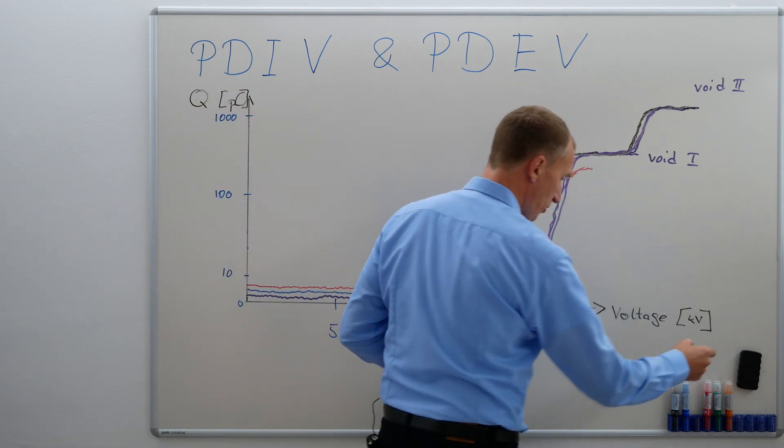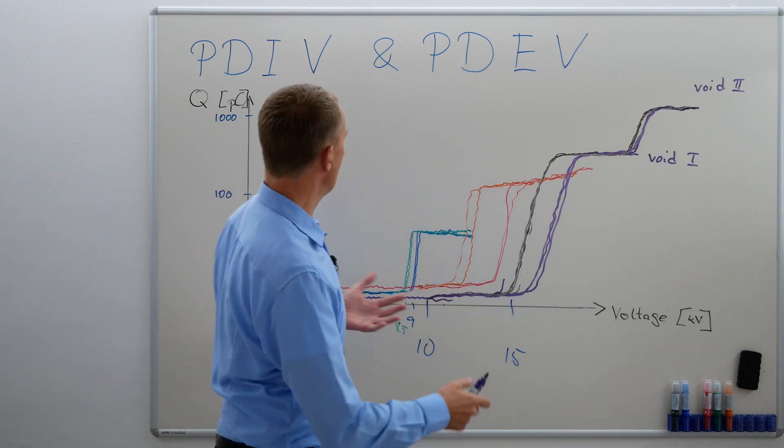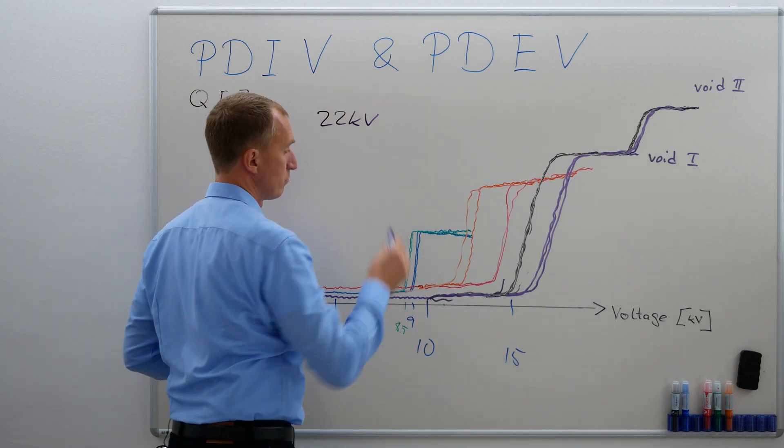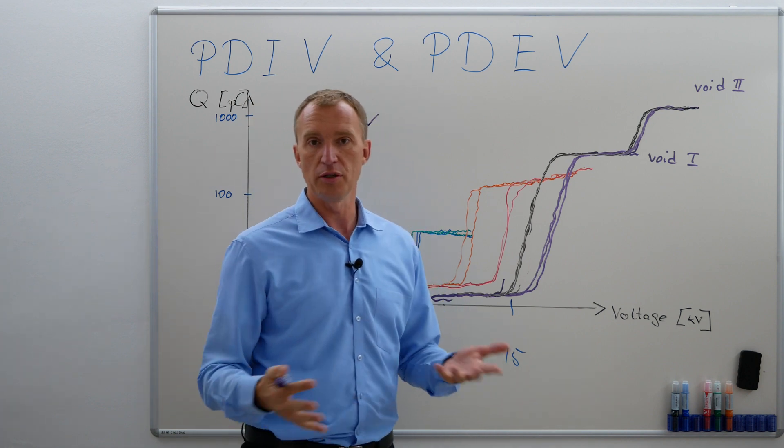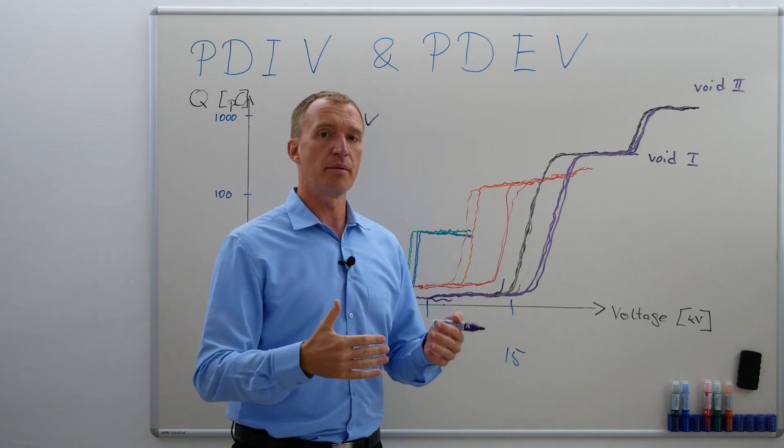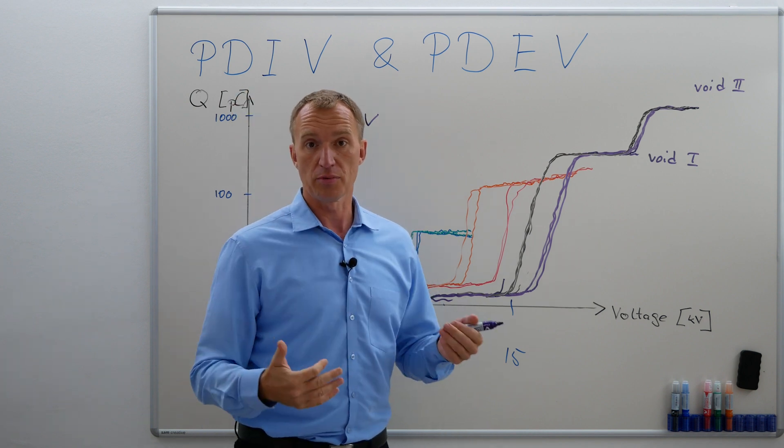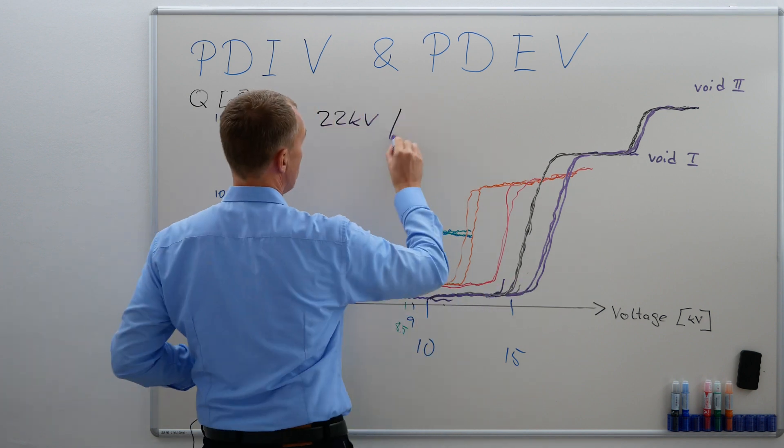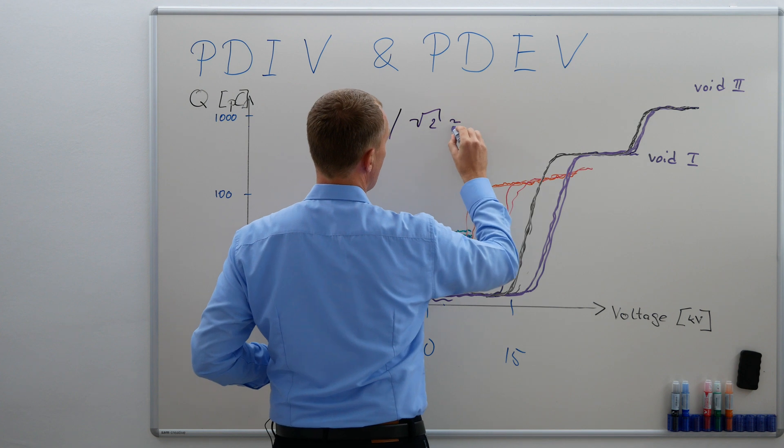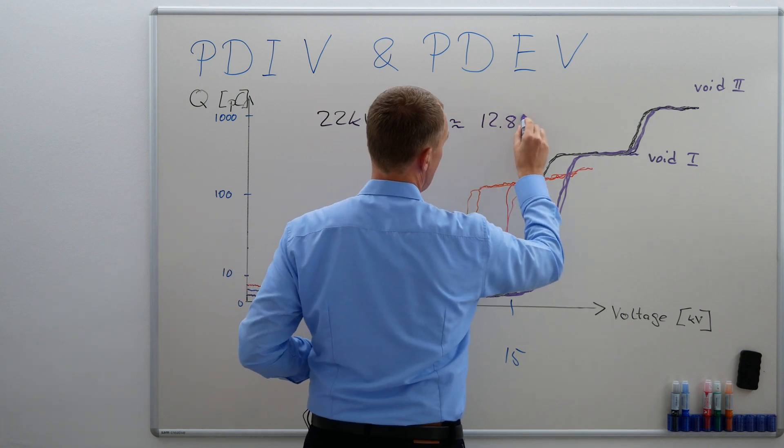So let's talk about the following example. Let's talk about the idea that I have a 22 kV cable. I can buy 22 kV medium voltage cables. And let's imagine I'm operating them. I mean this is the face-to-face voltage, right? The face-to-ground voltage is divided by the square root of 2 and this is around 12.8 kV.